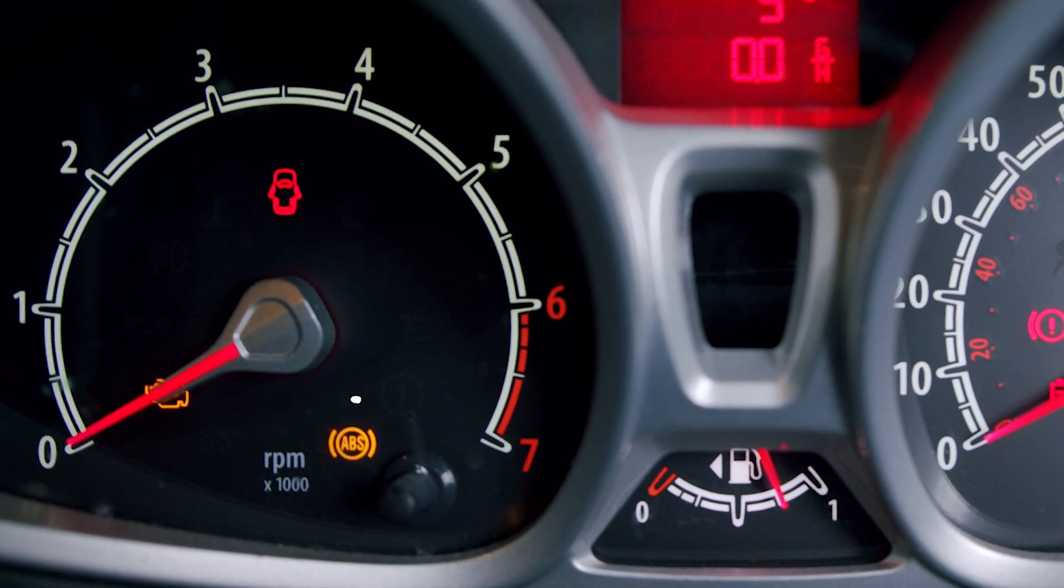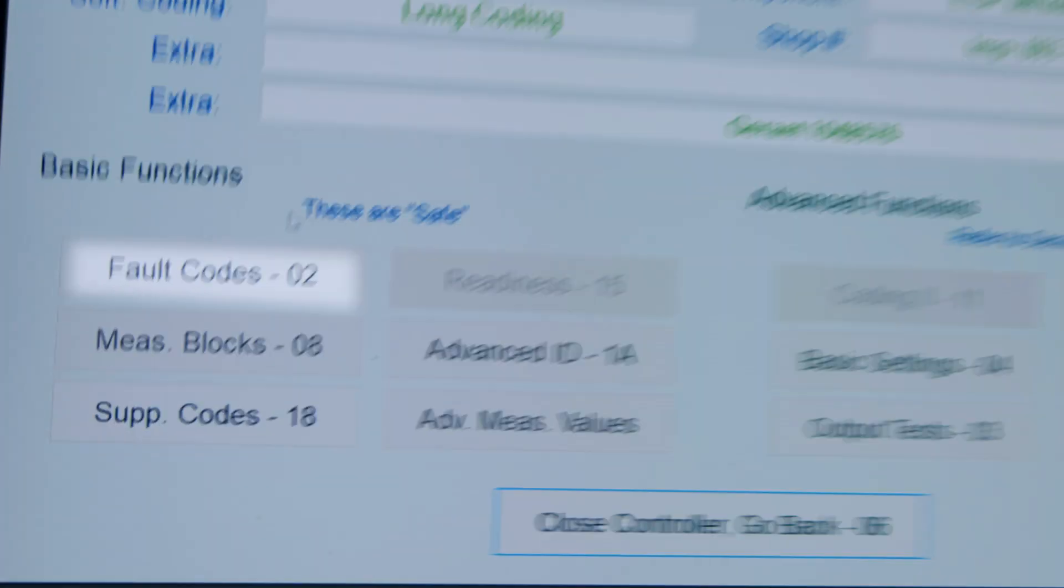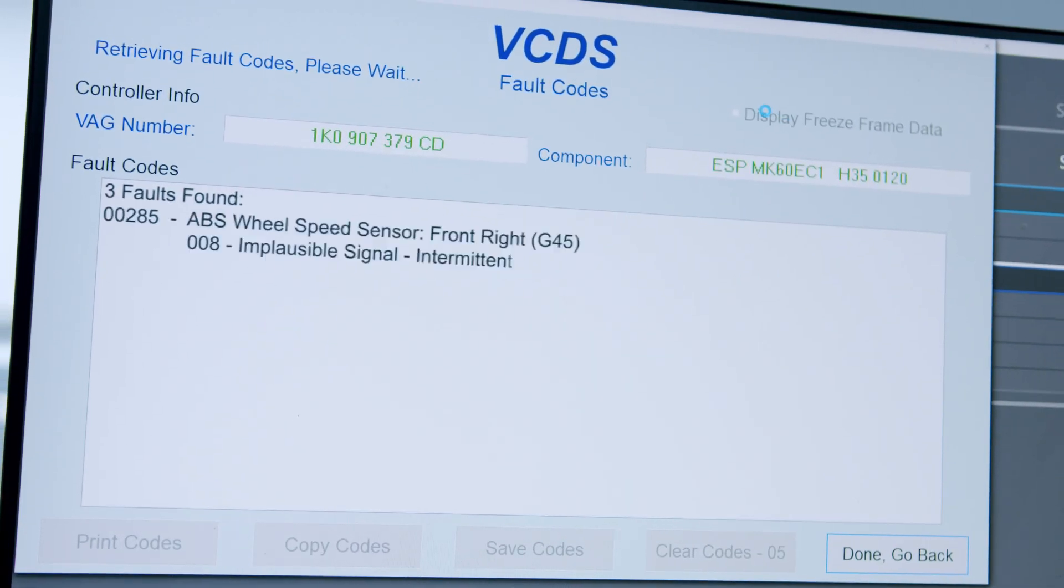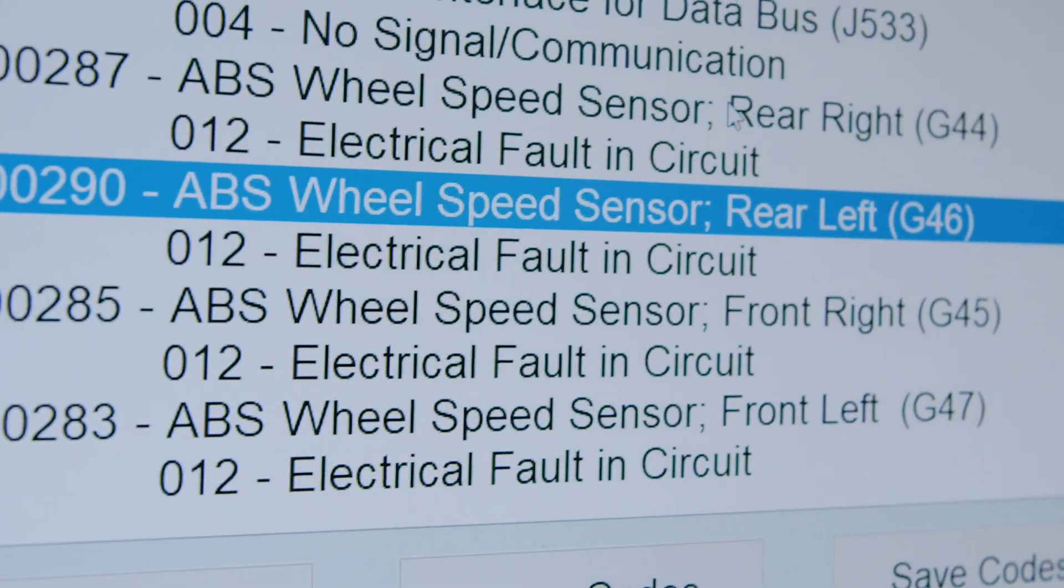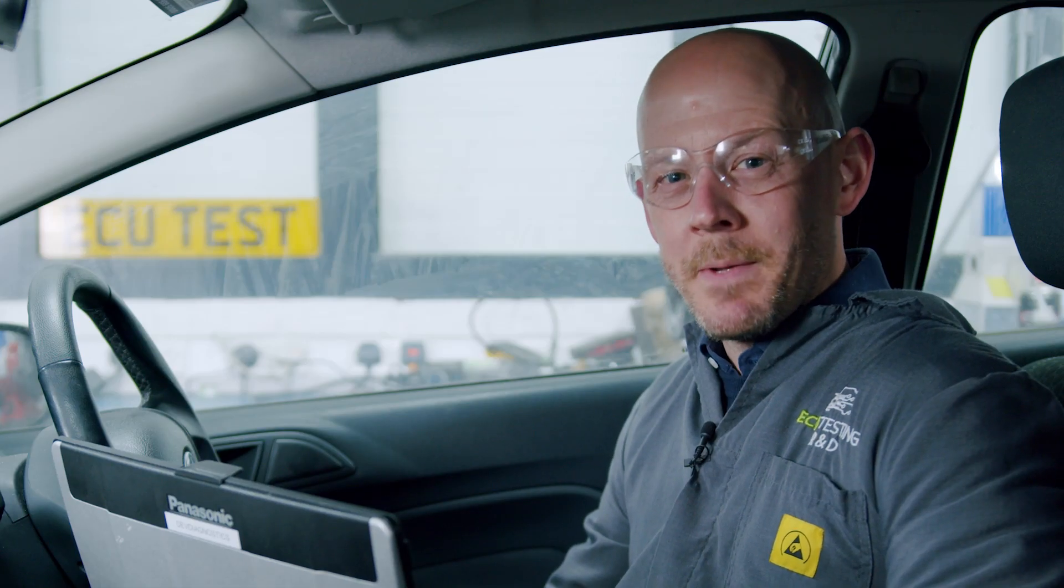As always, when you have the ABS warning light come on, it's best to scan the vehicle with diagnostic equipment. The good thing about wheel speed sensor codes is that generally the description will tell you which sensor is experiencing trouble. Once you have this information, we can determine what kind of trouble it's in, as not all descriptions will be specific enough.